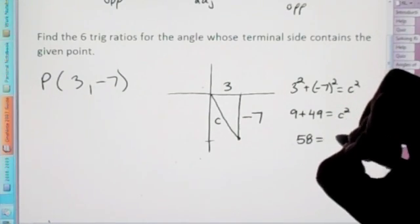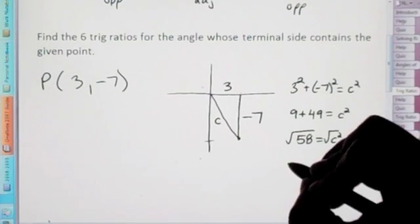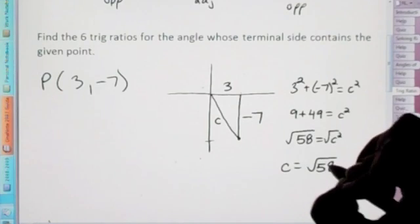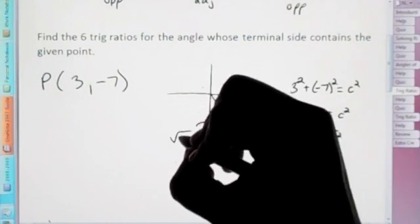So 9 plus 49 equals c squared. Therefore, this gives us 58 equals c squared. And then again, we square root. So our hypotenuse is going to be the square root of 58. Root 58.